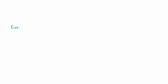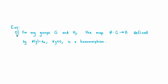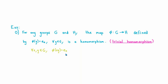Let's look at examples. For example number 0, suppose G and H are any two groups. There's always a homomorphism phi from G to H defined by the rule that phi of g is the identity in H for every g in G. This is called the trivial homomorphism. To verify it's a homomorphism, choose any x and y in G. phi of xy outputs the identity element, and the identity equals the identity times itself, which is phi of x times phi of y. So for any two groups G and H, this trivial map is always a homomorphism.